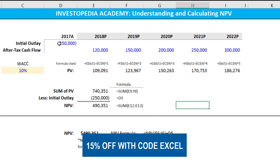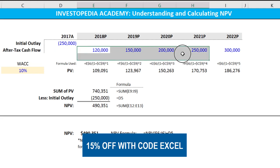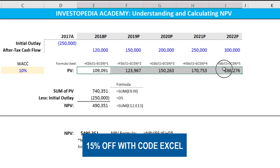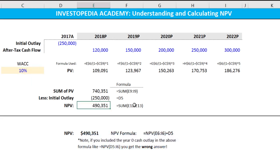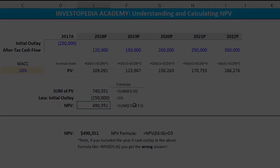To recap: you put your initial outlay and your after-tax cash flows, you discount each after-tax cash flow by the weighted average cost of capital raised to the period, you sum up the present values, you subtract the initial outlay, and you get the net present value.